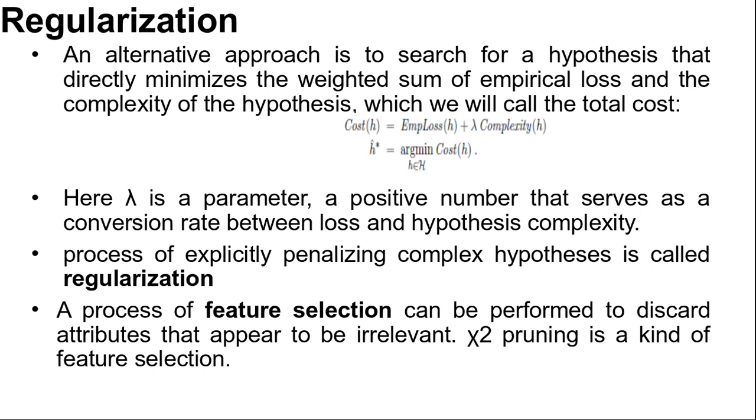Here ĥ* equals argmin Cost(h). Lambda is a parameter, a positive number that serves as a conversion rate between loss and hypothesis complexity. This approach combines loss and complexity into one metric, allowing us to find the best hypothesis all at once. We still need to do a cross-validation search to find the hypothesis that generalizes best, but this time it is with different values of lambda rather than size. We select the value of lambda that gives us the best validation set score. This process of explicitly penalizing complex hypotheses is called regularization.